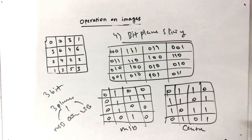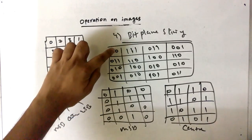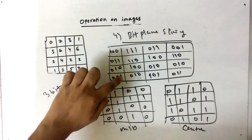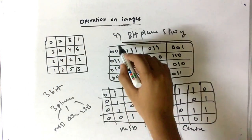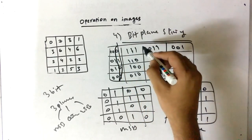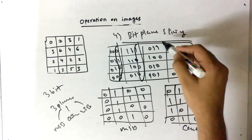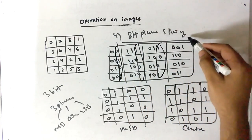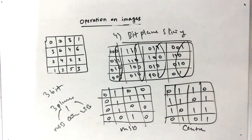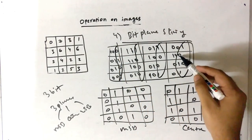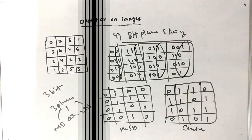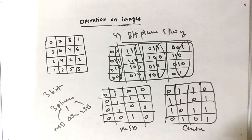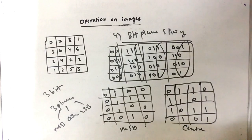For the LSB plane, the values are: 0, 1, 0, 1 — then 1, 0, 0, 1. This is how we perform the bit plane slicing operation. I hope you like the video.